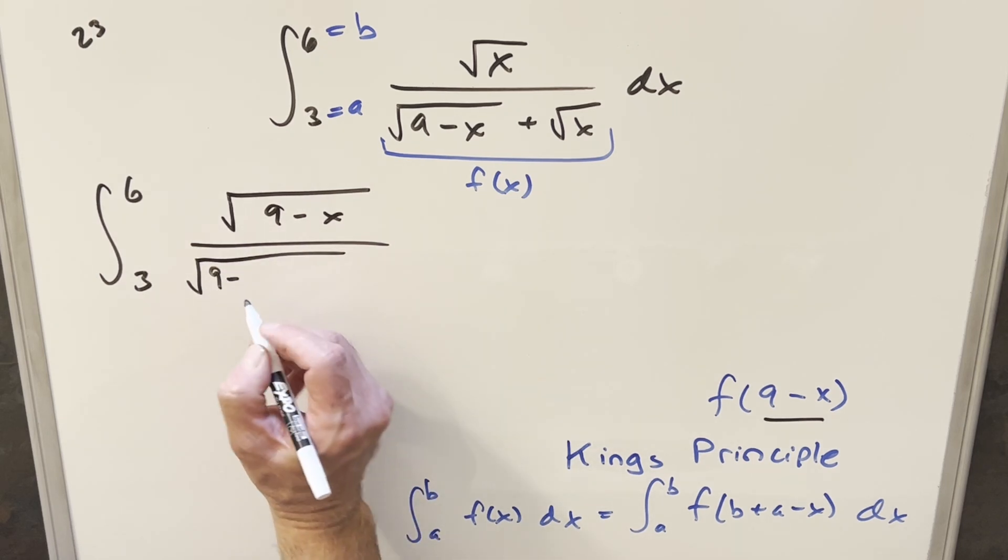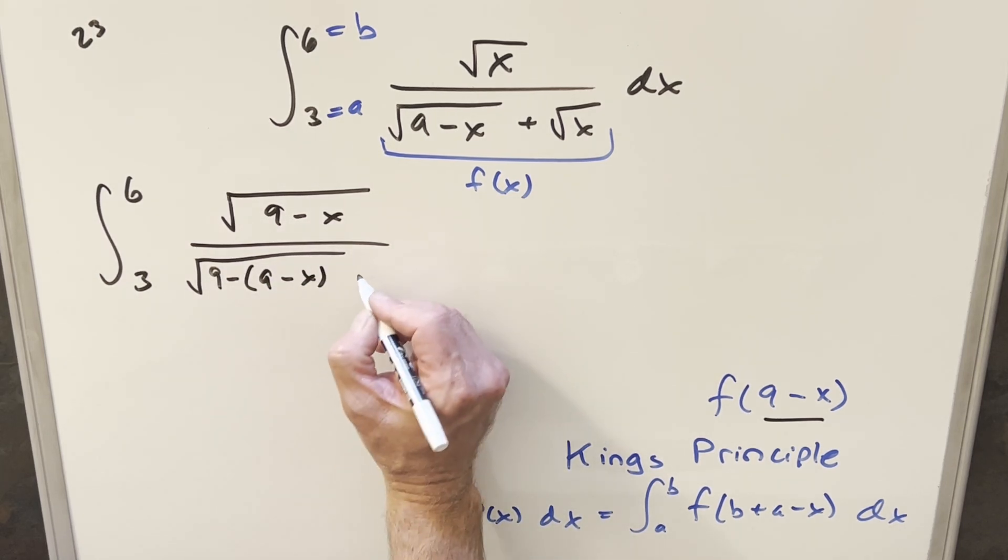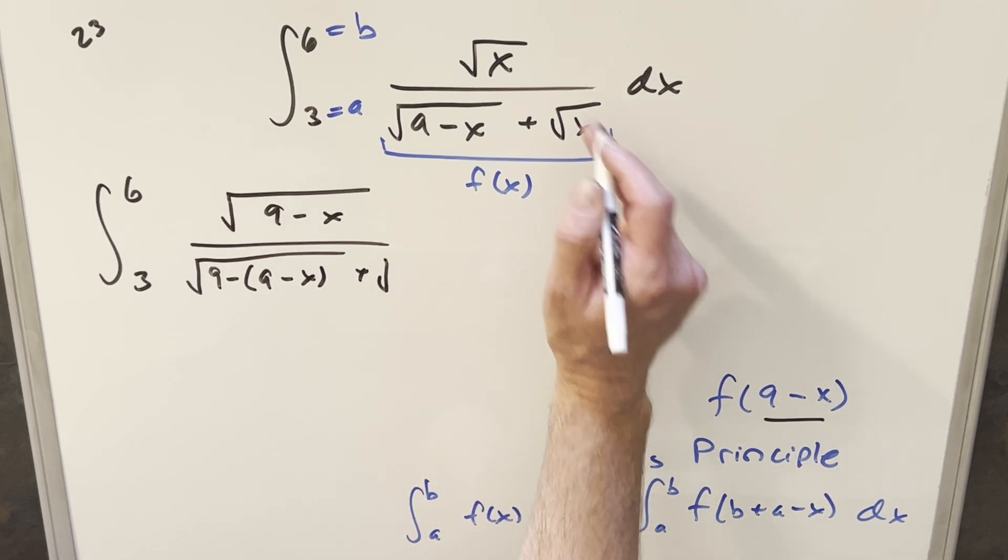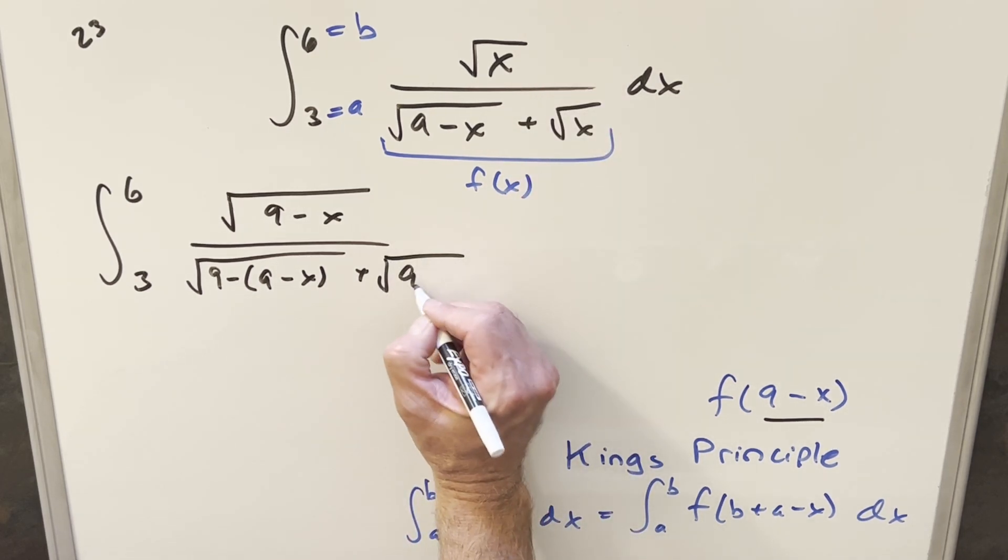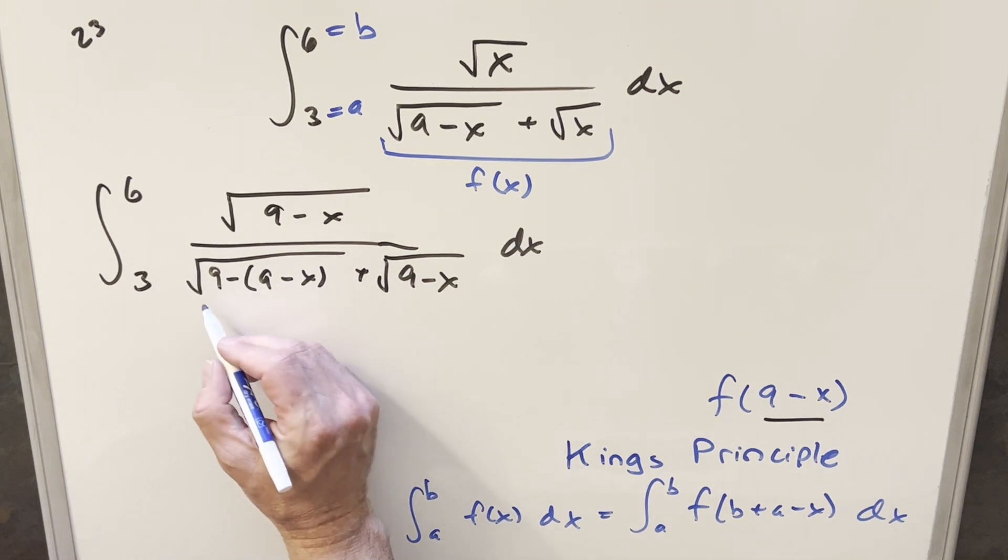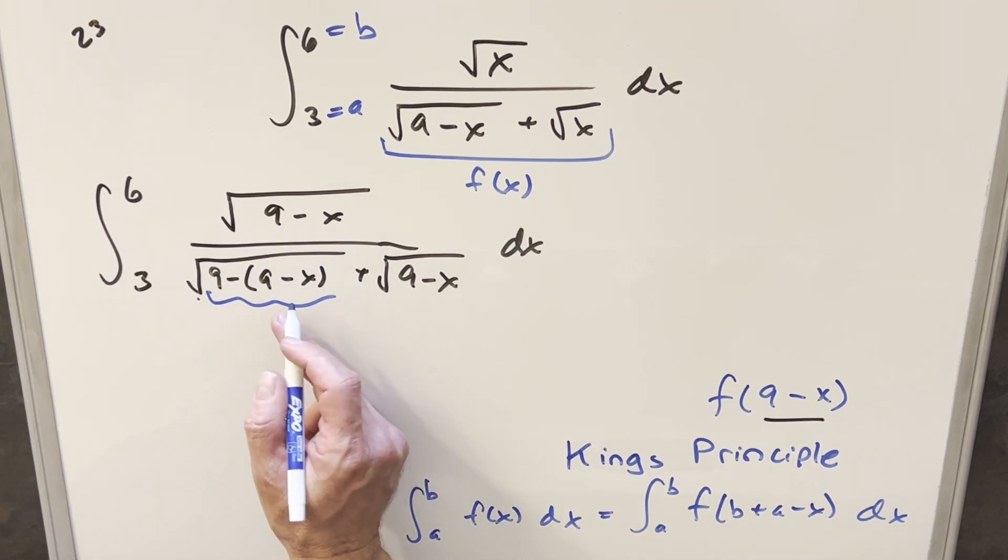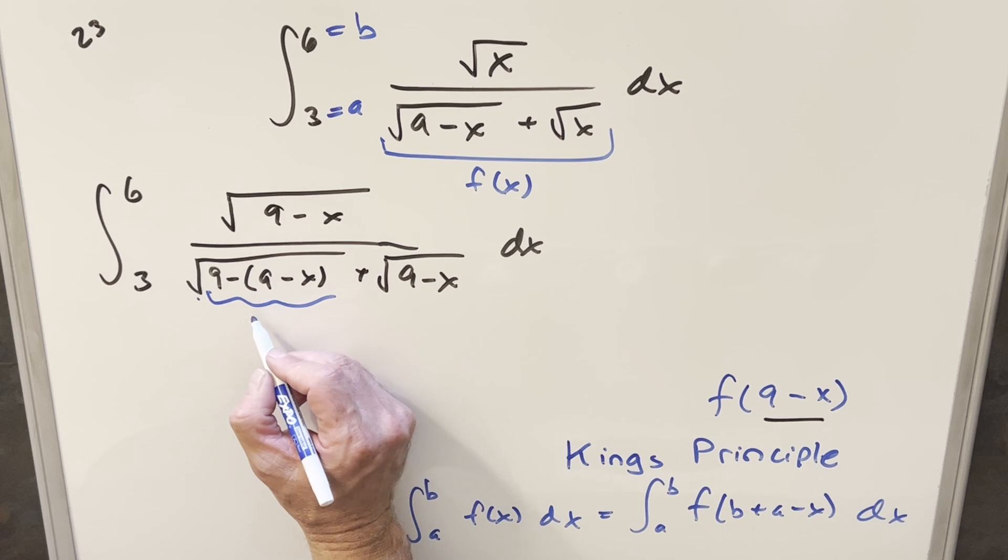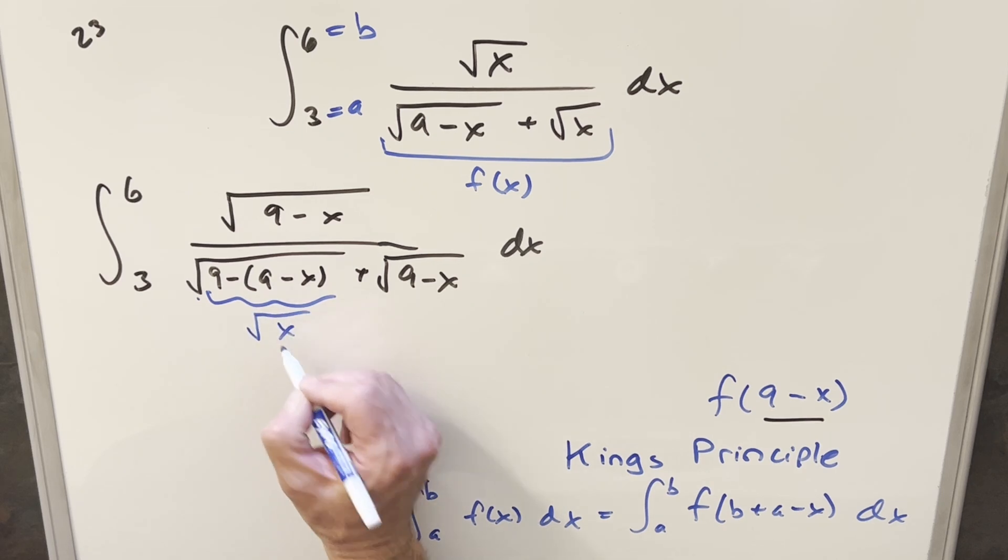So we have nine minus, and we plug in nine minus x here. And then this is the same thing as this term here, nine minus x dx. But when you clean this up right here, nine minus nine is going to be zero. Distributing the minus sign, this whole thing becomes square root of x.